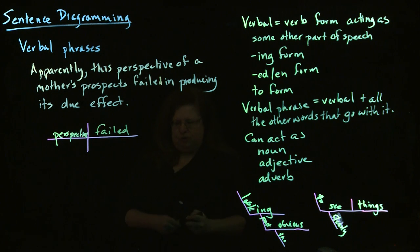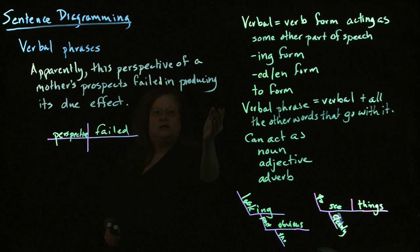And so, what we want to do now is say, okay, how are we going to attach our verbal in this sentence? The verbal itself is producing. The verbal phrase is producing its due effect. So, we have producing, which, even though it's not a verb, it's the verbal. And, we have its due effect, which is actually, in this particular case, a direct object.